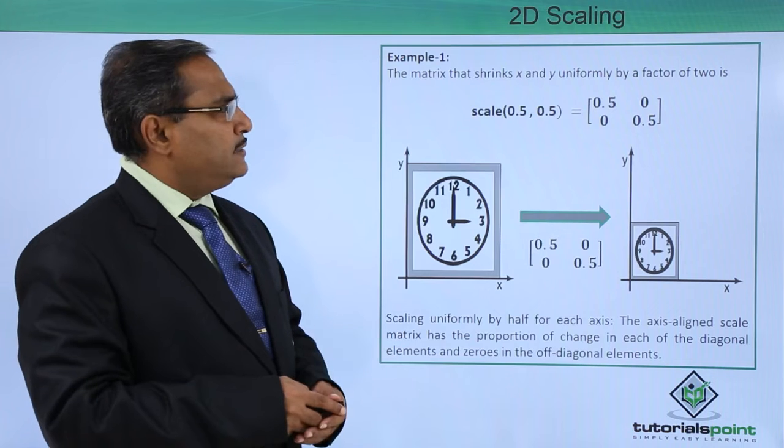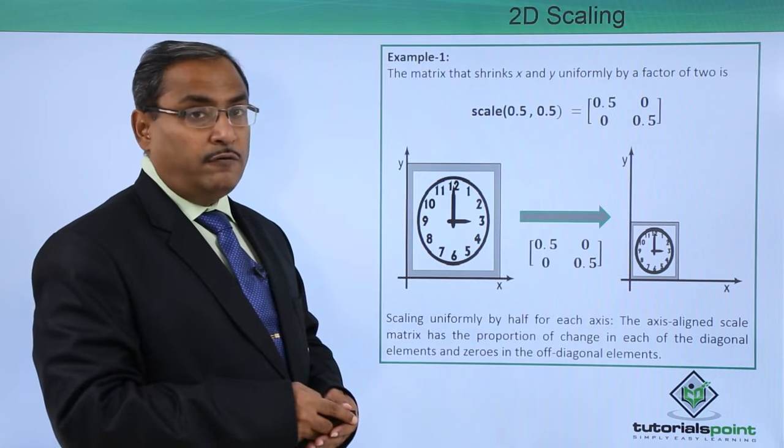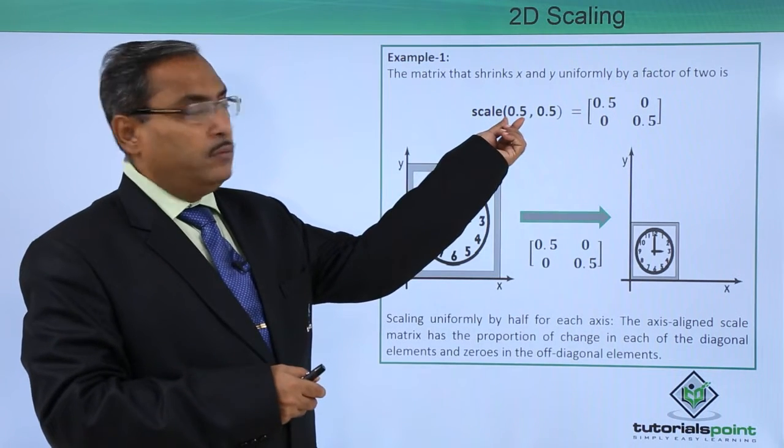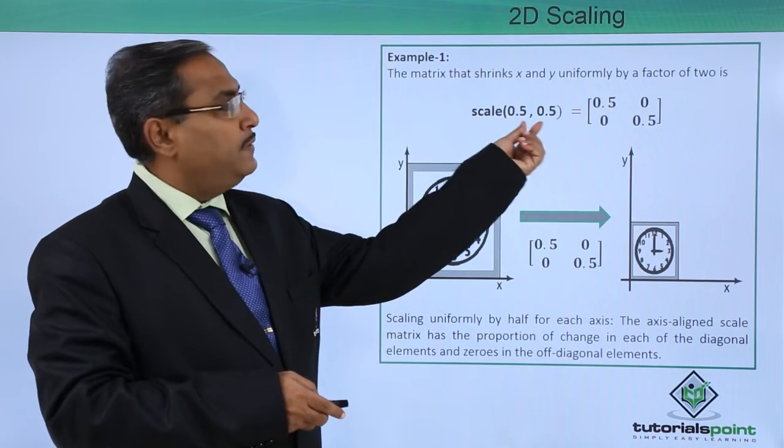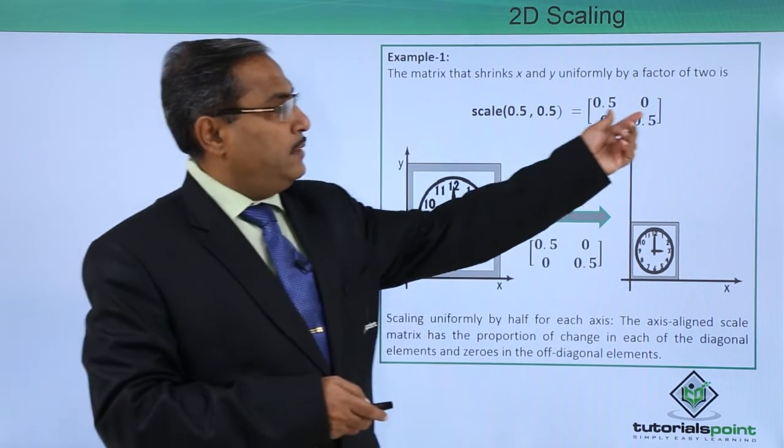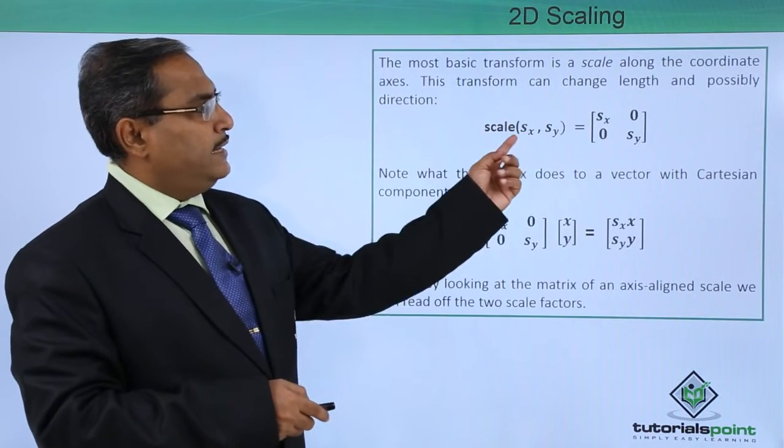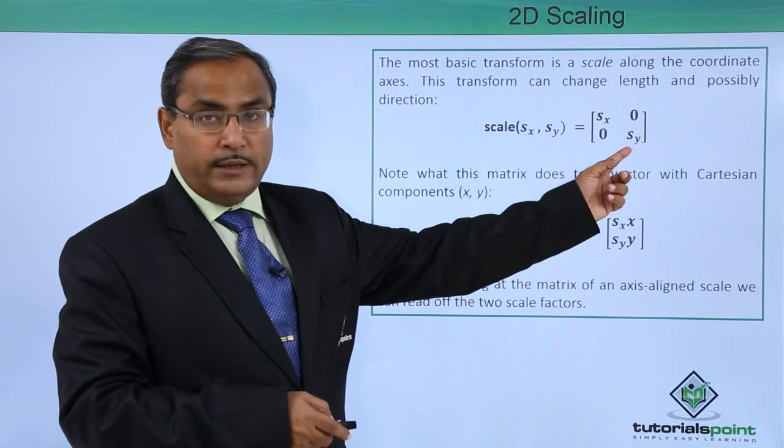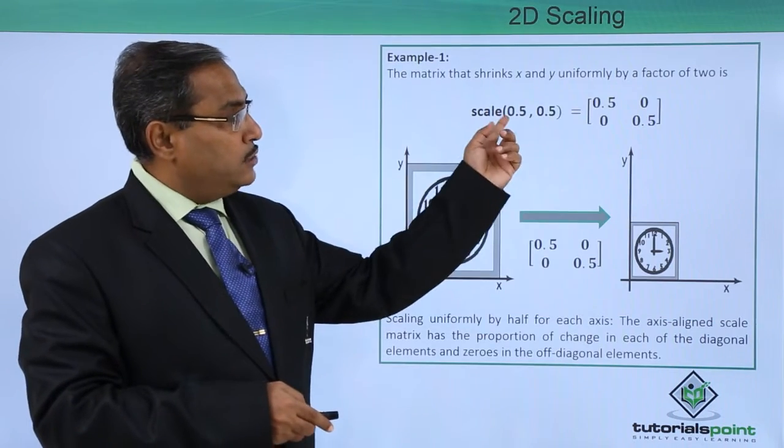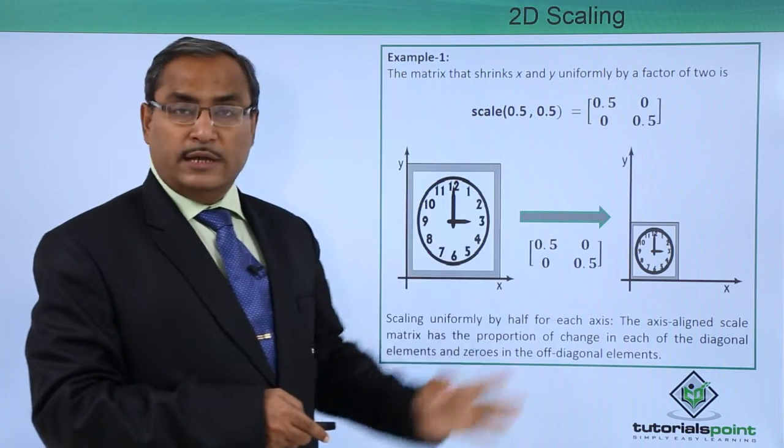The matrix that shrinks x and y uniformly by a factor of 2. Here we are having this factor of 2, so it will shrink. That is why we have considered Sx as 0.5 and Sy as 0.5 here. The respective matrix will be having the form like this. If you move to the previous slide, Sx will be coming here, Sy will be going there, and 0s and 0s will be there. 0.5 has come here, 0.5 has gone here, and 0 and 0 is the same.